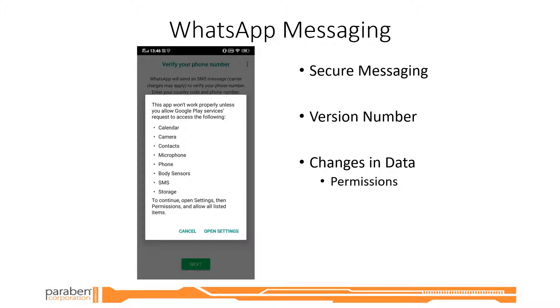The version number of the app is important. This can affect whether or not the app data can be found in parsed or unparsed data. With either option, the app view in the E3 platform will direct you to where you can find that data.